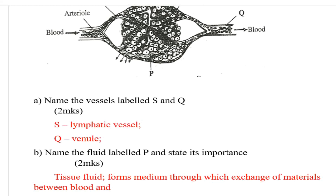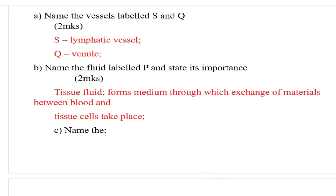Name the fluid labeled P and state its importance. Fluid P is tissue fluid. It forms a medium through which exchange of materials between the blood and tissue cells takes place.